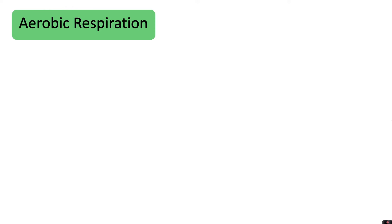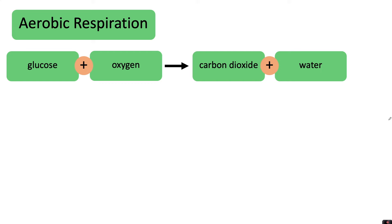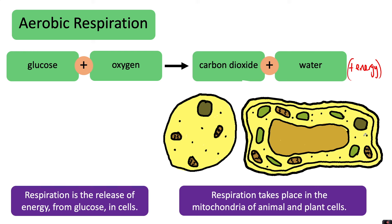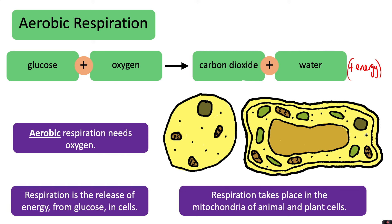To recap: this is the equation for aerobic respiration — sometimes you will see '(+ energy)' written in brackets. Aerobic respiration takes place in the mitochondria of animal and plant cells, and importantly it requires oxygen. This distinguishes it from anaerobic respiration, which I'll introduce in another video, and which does not involve oxygen.